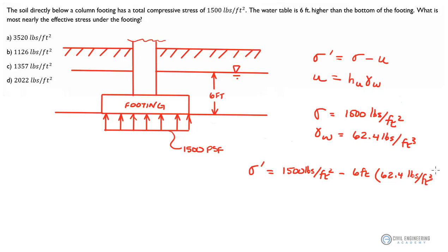And if I take 1,500 pounds and subtract 6 times 62.4... just checking my units real quick. I should end up with pounds per foot squared minus pounds per foot squared, right? This cube goes down to squared and that disappears.